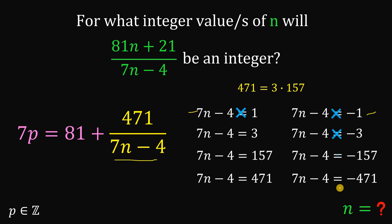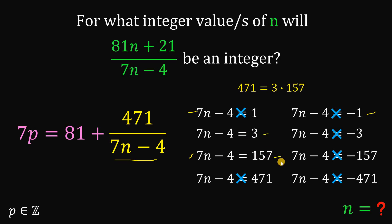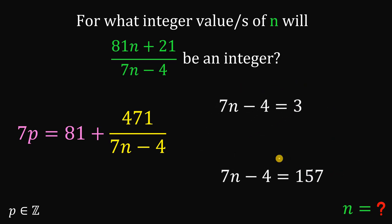We apply similar reasoning to the remaining equations. For (7n - 4) = 3: adding 4 gives 7n = 7, which is a multiple of 7. For (7n - 4) = 157: adding 4 gives 7n = 161, and 161 is divisible by 7 because 161 = 140 + 21. So these two equations give valid integer solutions.